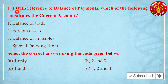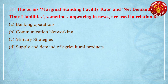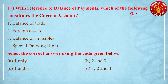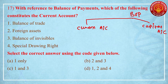Question number 7: with reference to balance of payments, which of the following constitutes the current account? Options include balance of trade, foreign assets, balance of invisibles, and special drawing rights. The money value of all foreign trade of a nation in terms of imports and exports with the rest of the world in one accounting year is called balance of payment. Trade is posted in two important accounts: one is the current account and the second is the capital account.